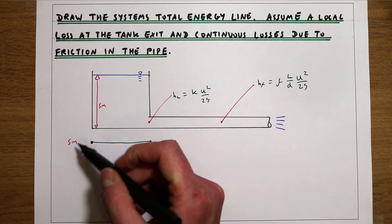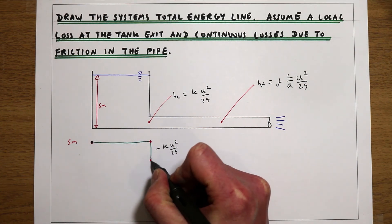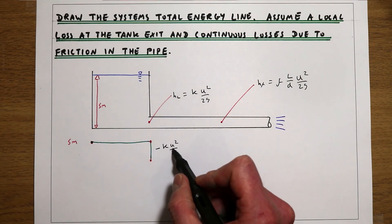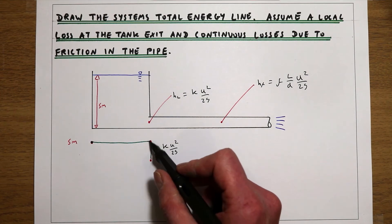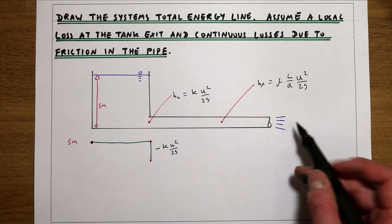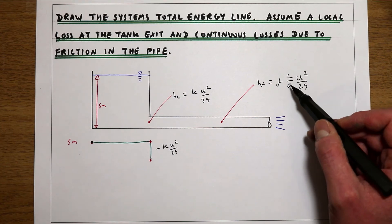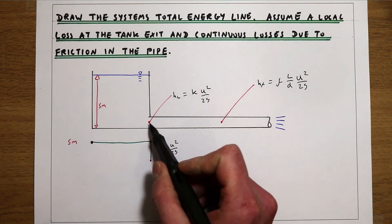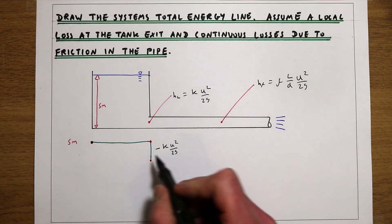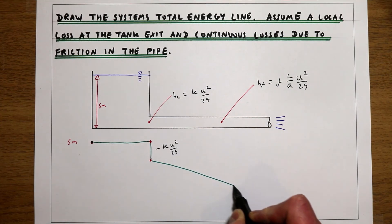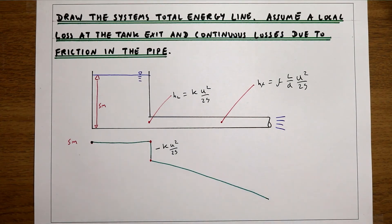So we start out with 5m of energy, and at the exit point where the pipe exits the tank, we're going to lose k·u²/2g in a sudden drop. As we go down the pipe, we're also going to be losing energy due to friction, but this isn't going to be a sudden drop — this is going to be a continuous loss in energy. So we're going to be continuously losing energy as we go down this pipe, like a gradient line that continuously goes down.